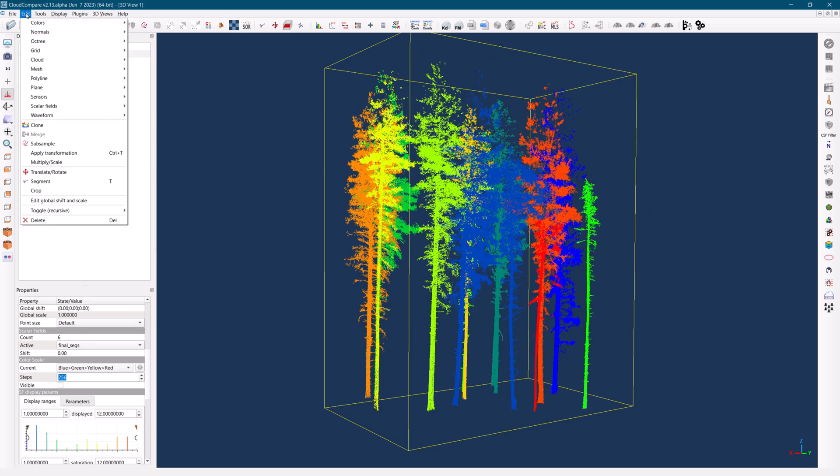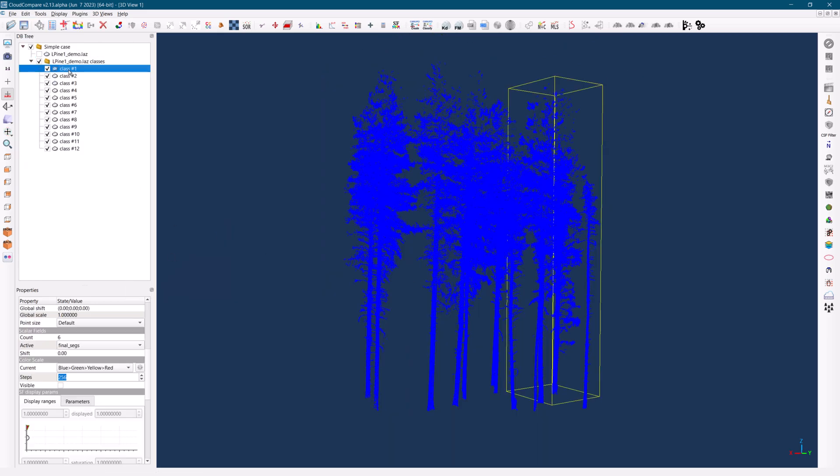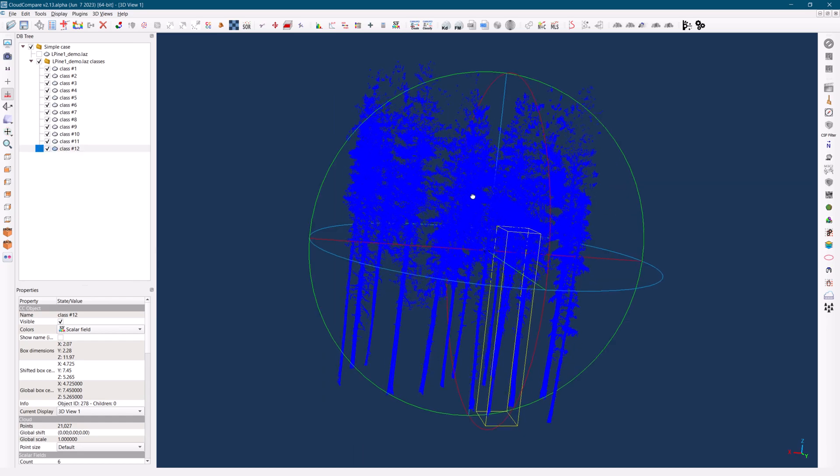To separate the trees into individual point clouds, select the final segment scalar field and split it into integer values.